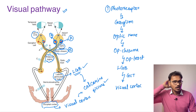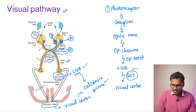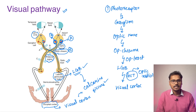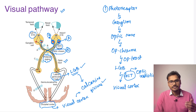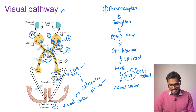The geniculocalcrine tract is also referred to as the optic radiations. This is the entire pathway through which impulses travel from the level of the eye to the brain. Now we will understand what happens with lesions at various different levels.